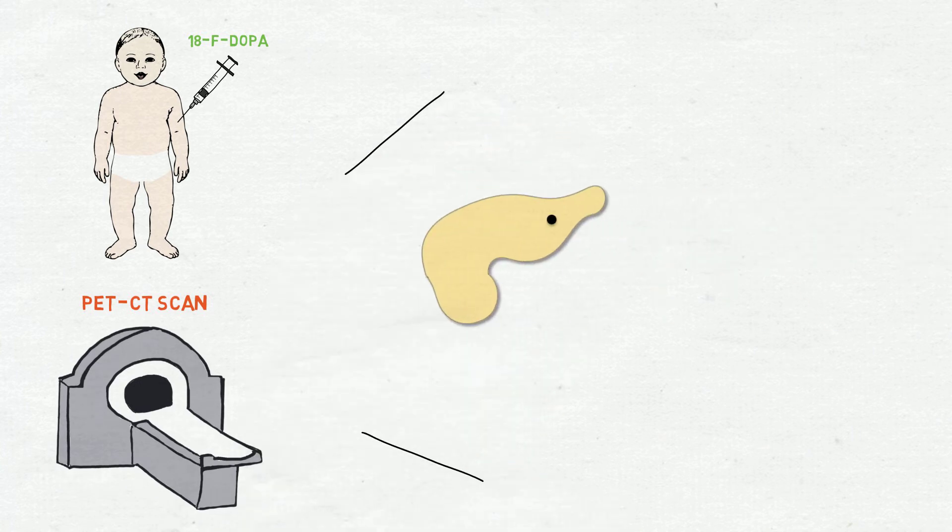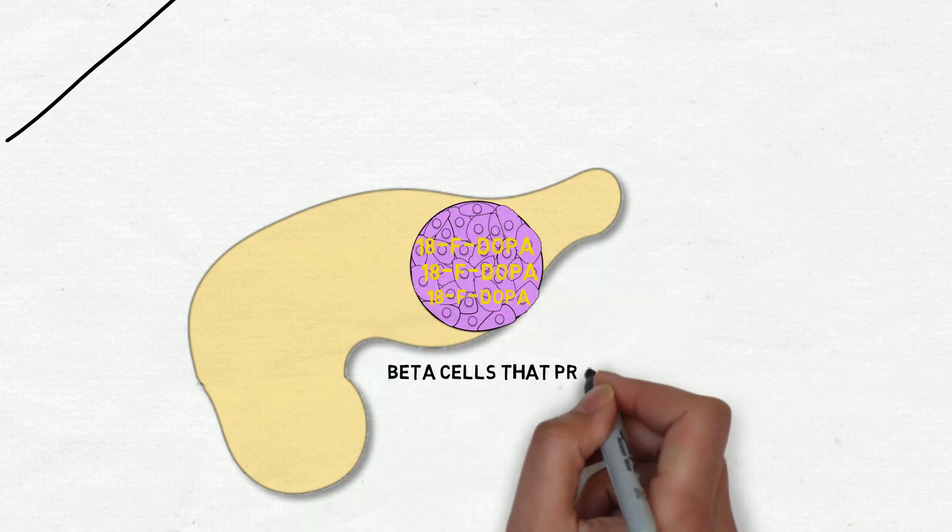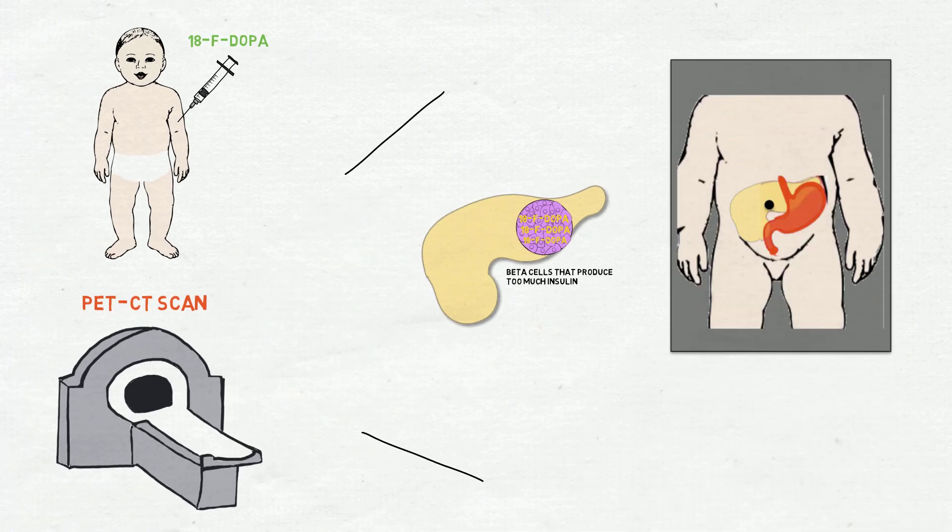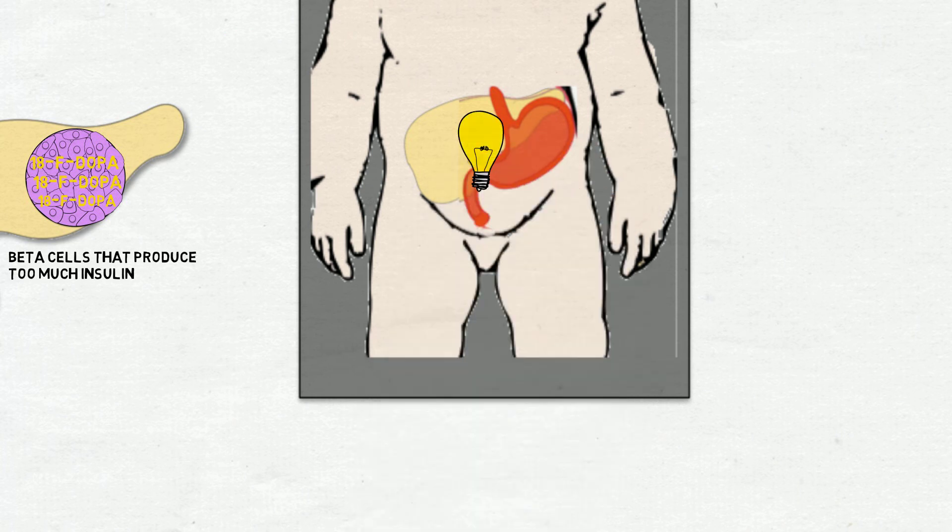In patients with focal CHI, the 18F DOPA collects within the beta cells that produce too much insulin. When looking at the PET-CT images, this affected area appears as a bright spot in the pancreas.